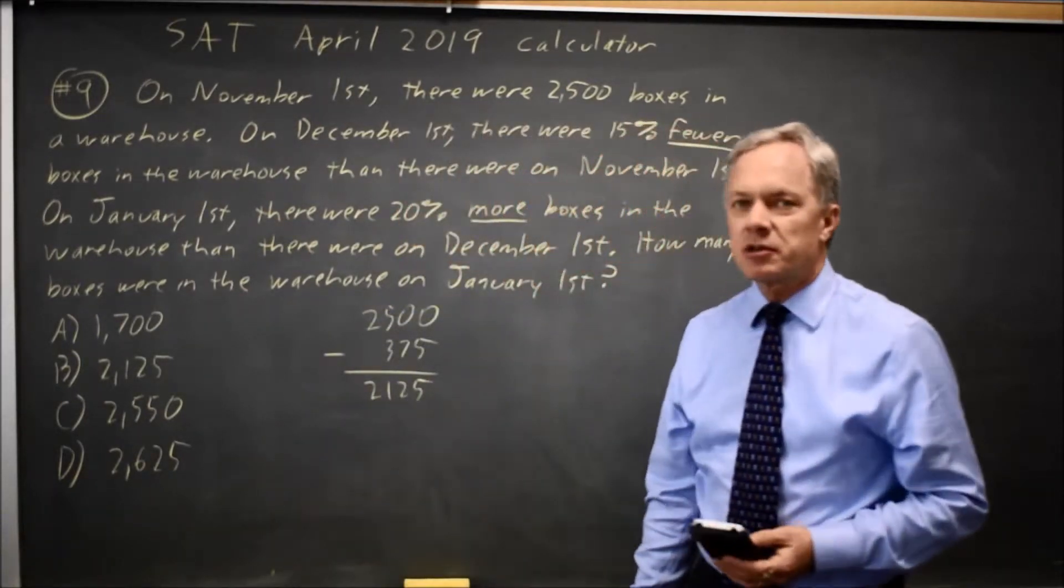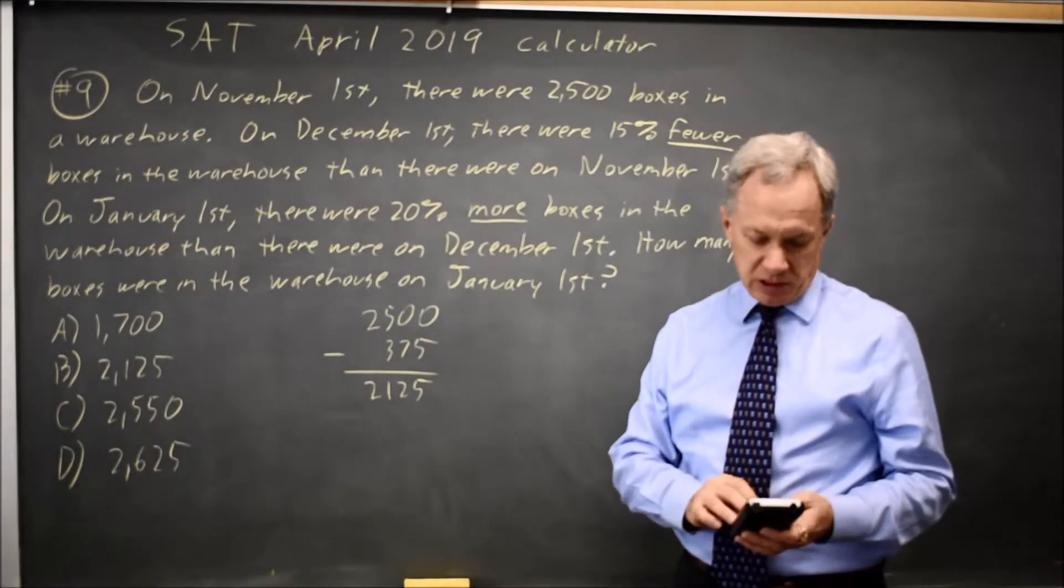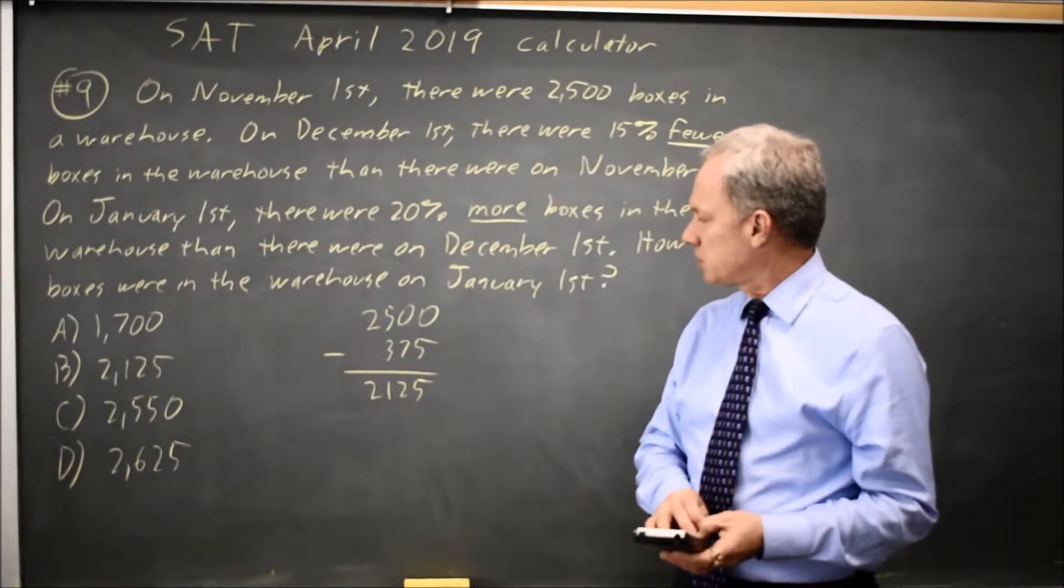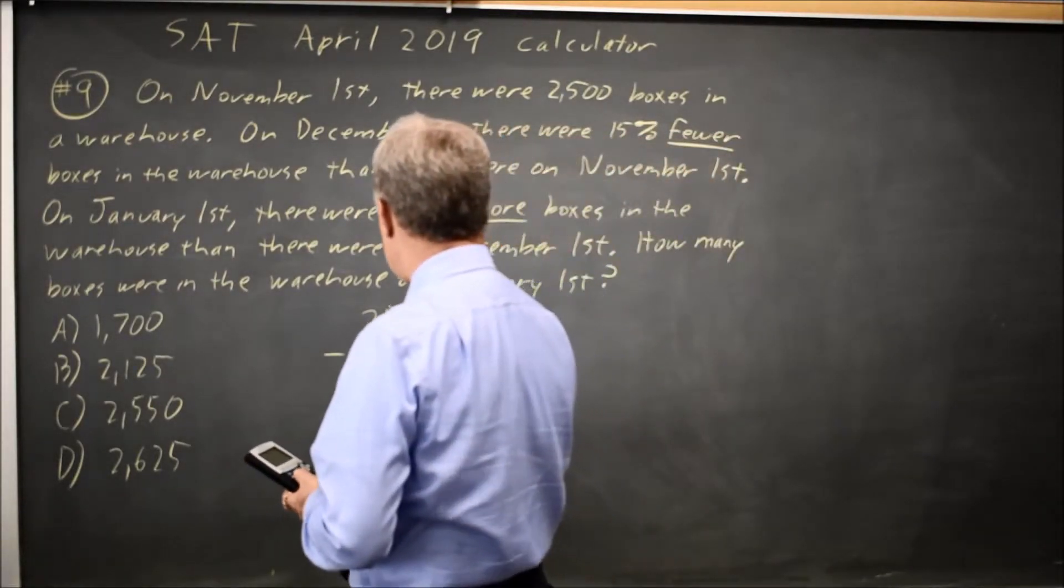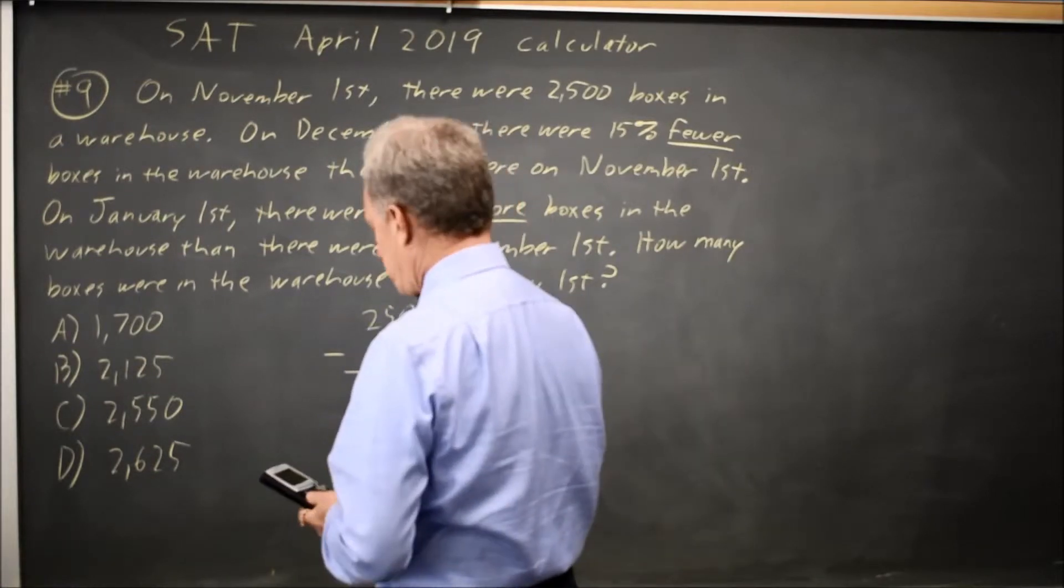And then in January there are 20% more than 2125. 0.2 times 2125 is 425, so we have 425 more boxes. And since it's more, we're going to add.